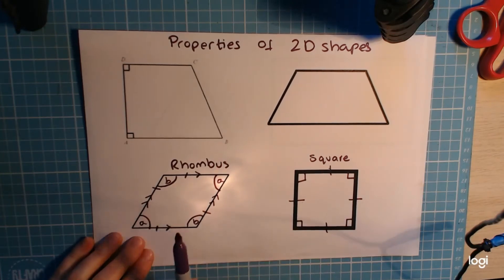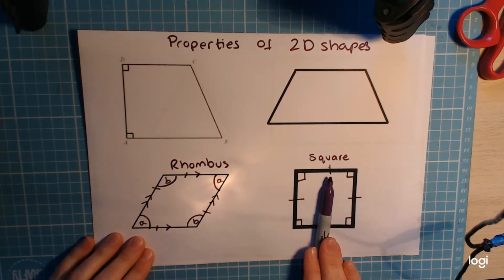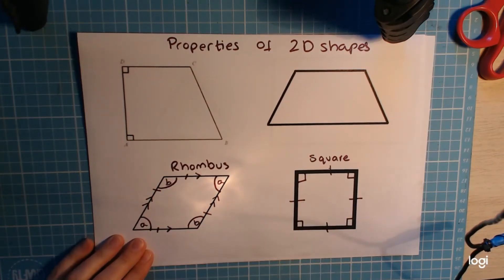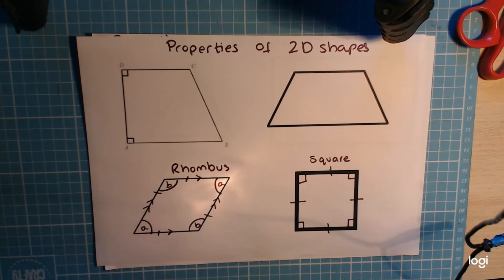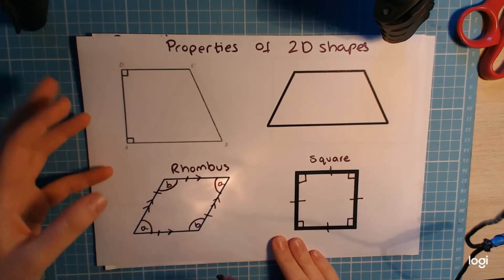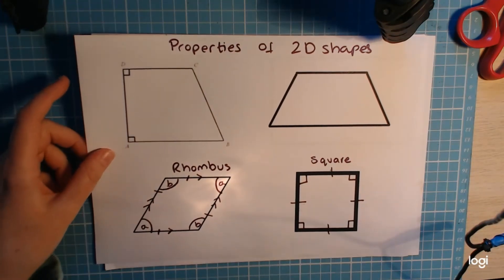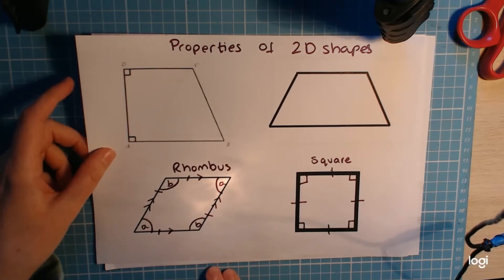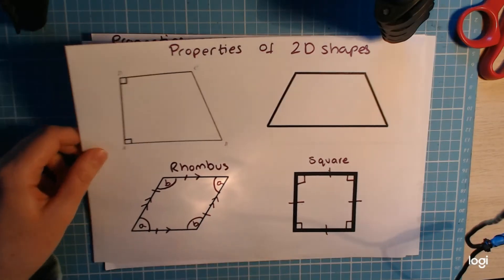A rhombus is essentially a square which has been squashed a little bit, so a rhombus is closely related to a square. Please take notes on these in your book and do some sketches. Now I'm going to move on to the next sheet, which has two shapes that relate to these ones.